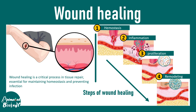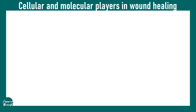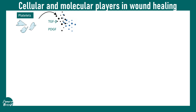First we would look at these tissue mediators and try to understand their role, and then we would go step by step to understand at which step these tissue mediators might be useful. The first platelet-derived factors we discuss are TGF-beta and platelet-derived growth factor, or PDGF. Both are really important in the context of tissue repair, helping in angiogenesis — the growth of new blood vessels — and fibrosis. Vascular remodeling and smooth muscle migration are also triggered by these factors.